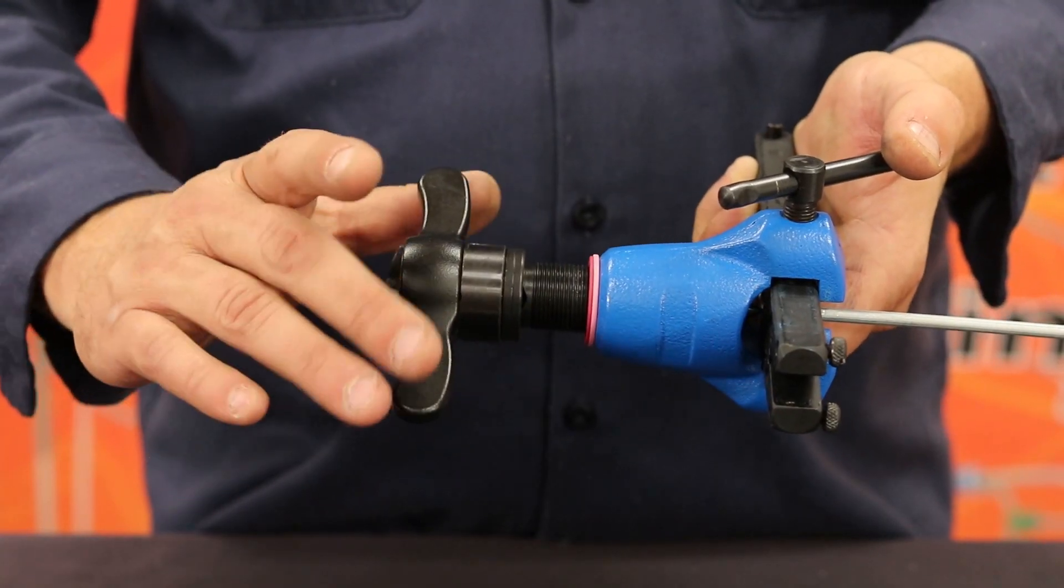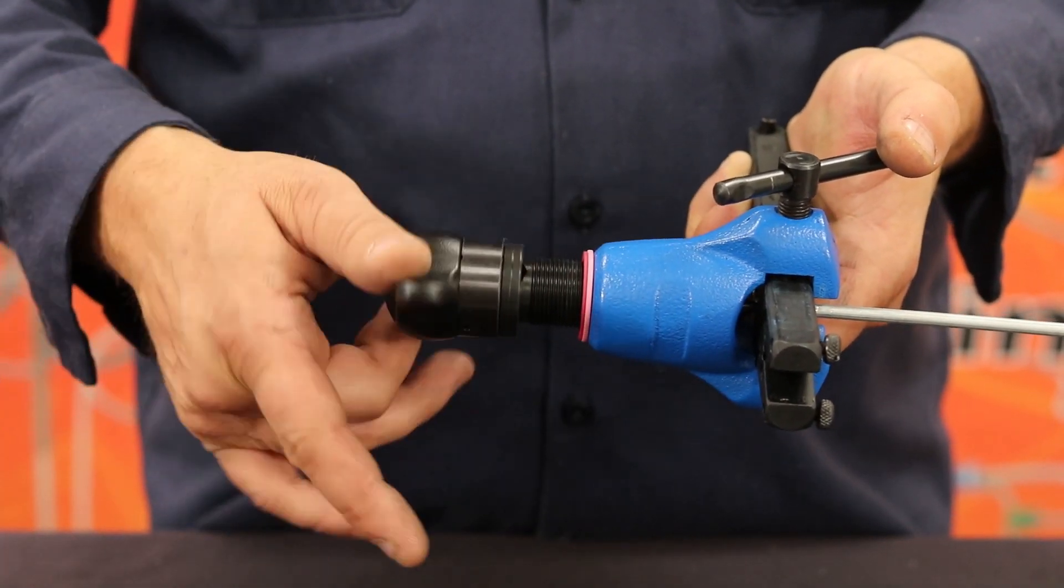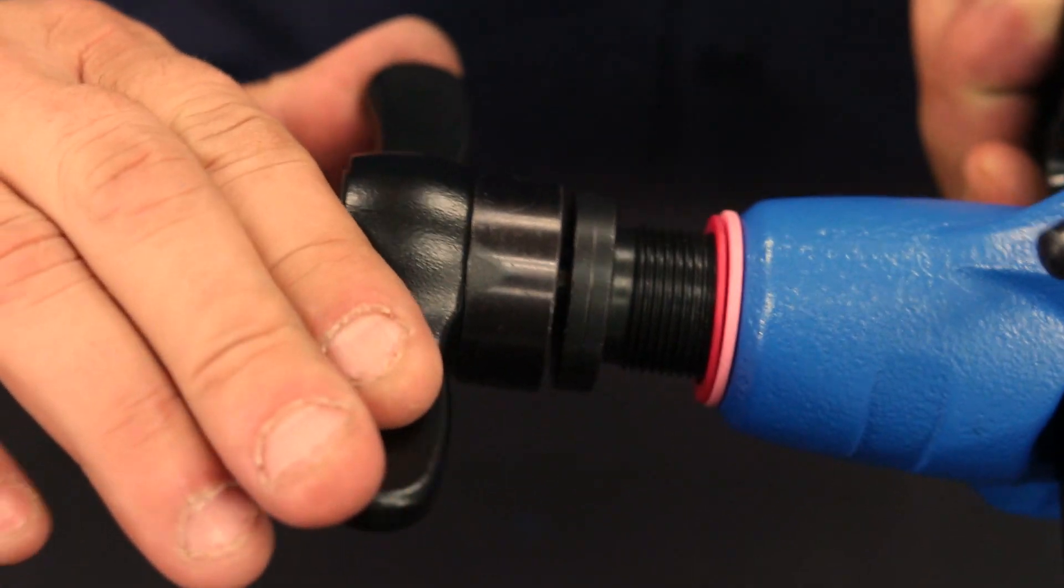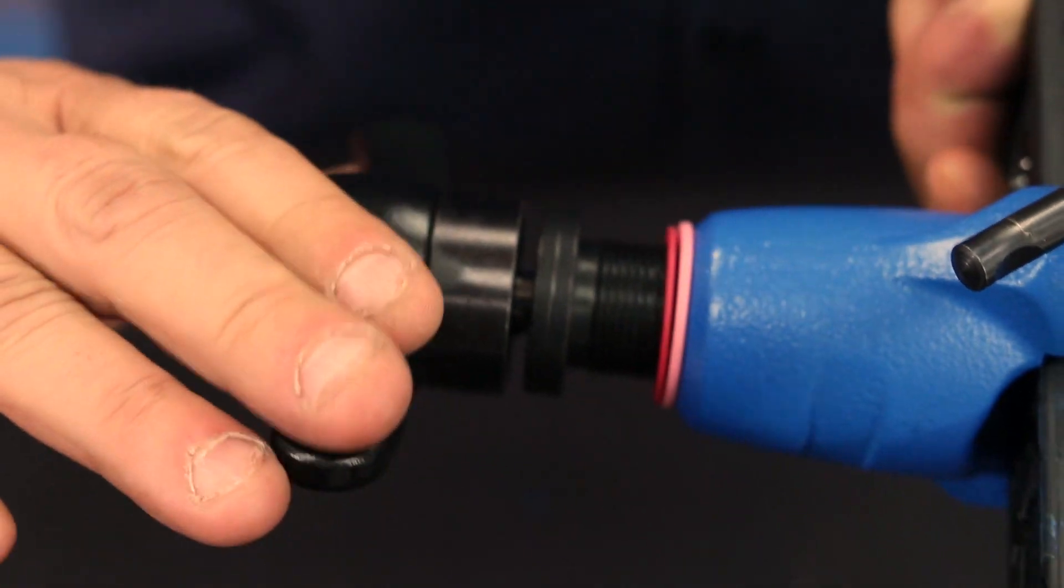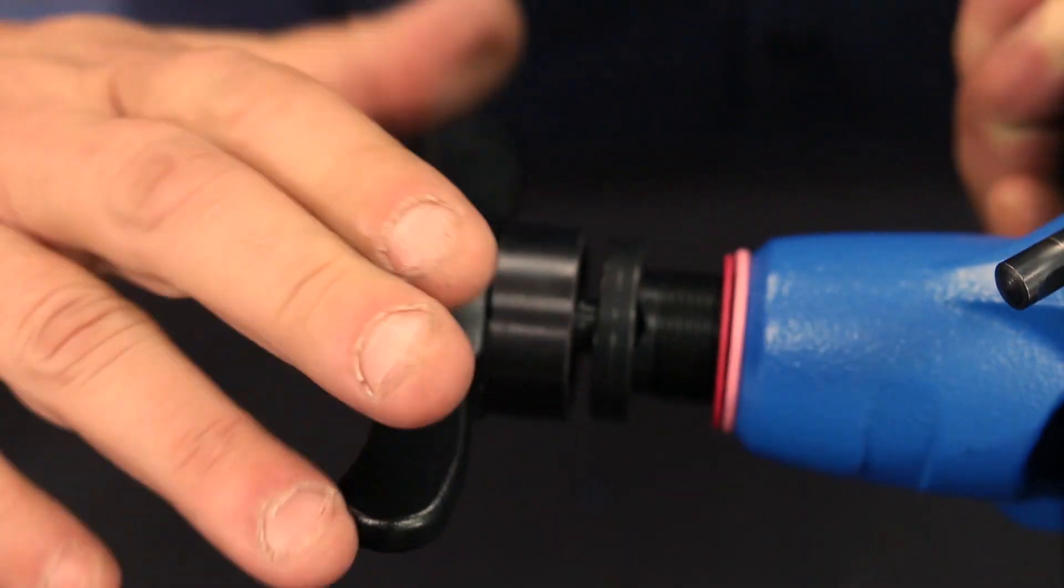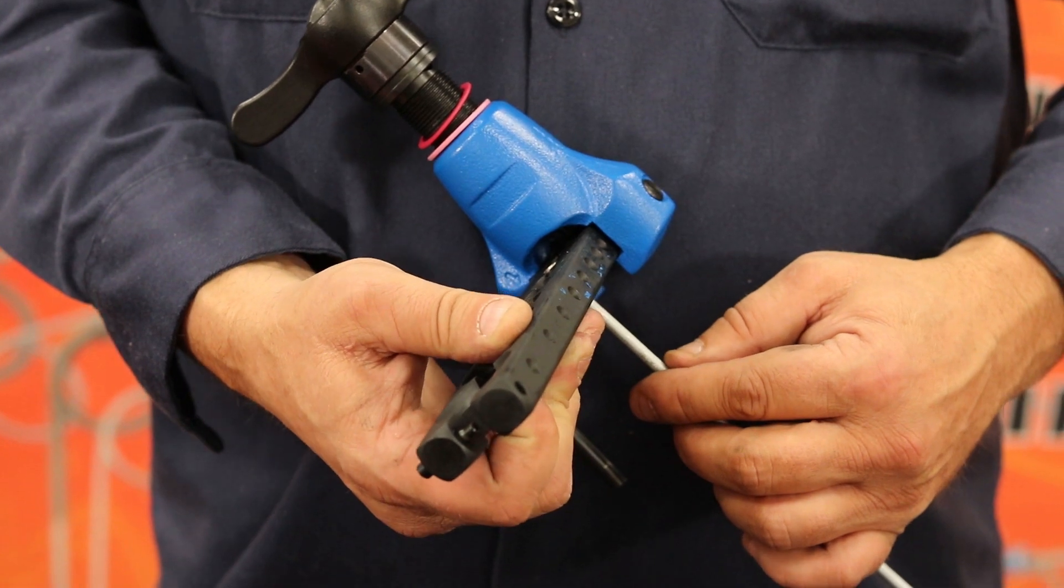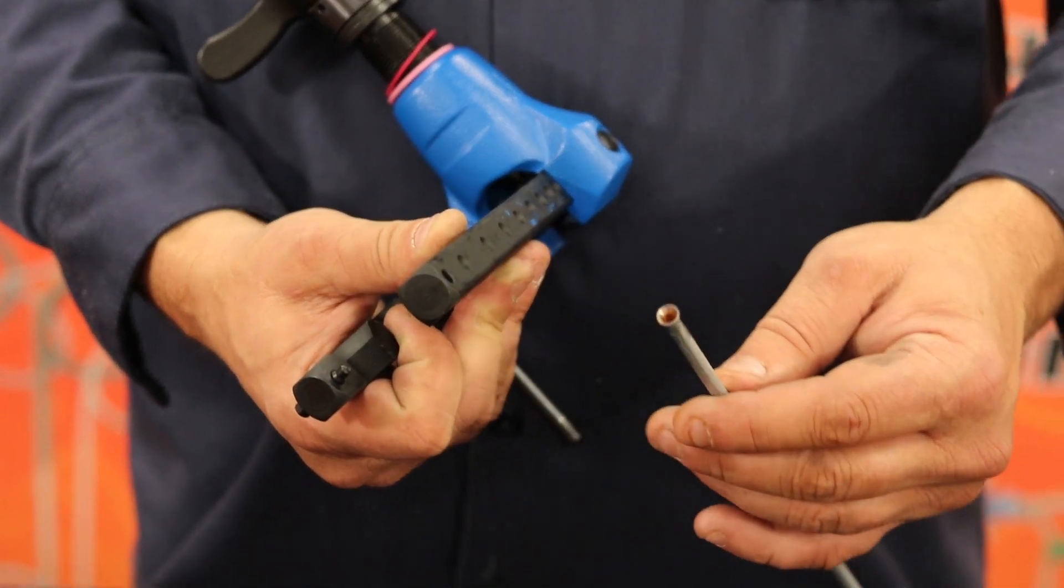With the tube clamped, begin turning the top handle until the handle pops and spins with no effort. You will feel the tube forming as you are turning. You cannot over-tighten this tool. Once the cone reaches the die block, it pops and you are done. Finally, loosen the tool and inspect your flare.